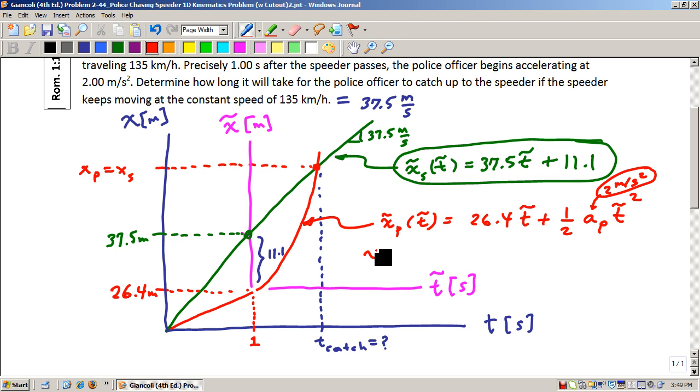And so, X-tilde of the police officer is 26.4 T-tilde plus a half of two is one. So we just find that that is T-tilde squared.